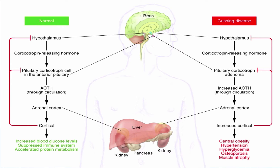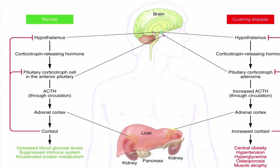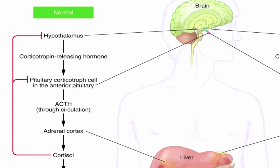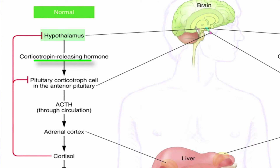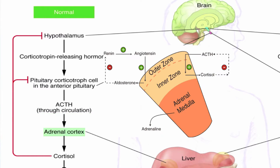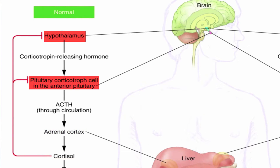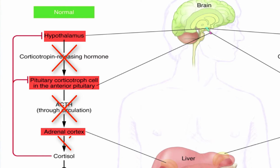Cortisol is normally regulated in a feedback loop system. The hypothalamus releases CRH, or corticotropin-releasing hormone, which stimulates the corticotrophs in the anterior pituitary to release ACTH — adrenocorticotropic hormone. ACTH then stimulates the adrenal gland to produce cortisol, and when enough cortisol is produced, it acts to inhibit both the hypothalamus and the pituitary, suppressing further cortisol production to maintain homeostatic levels.